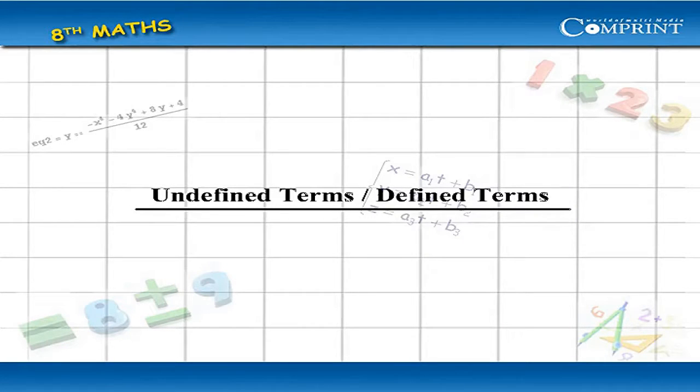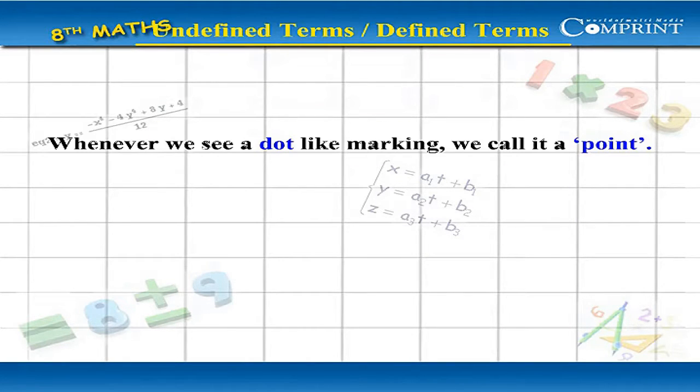Undefined terms, defined terms. Whenever we see a dot-like marking, we call it a point.